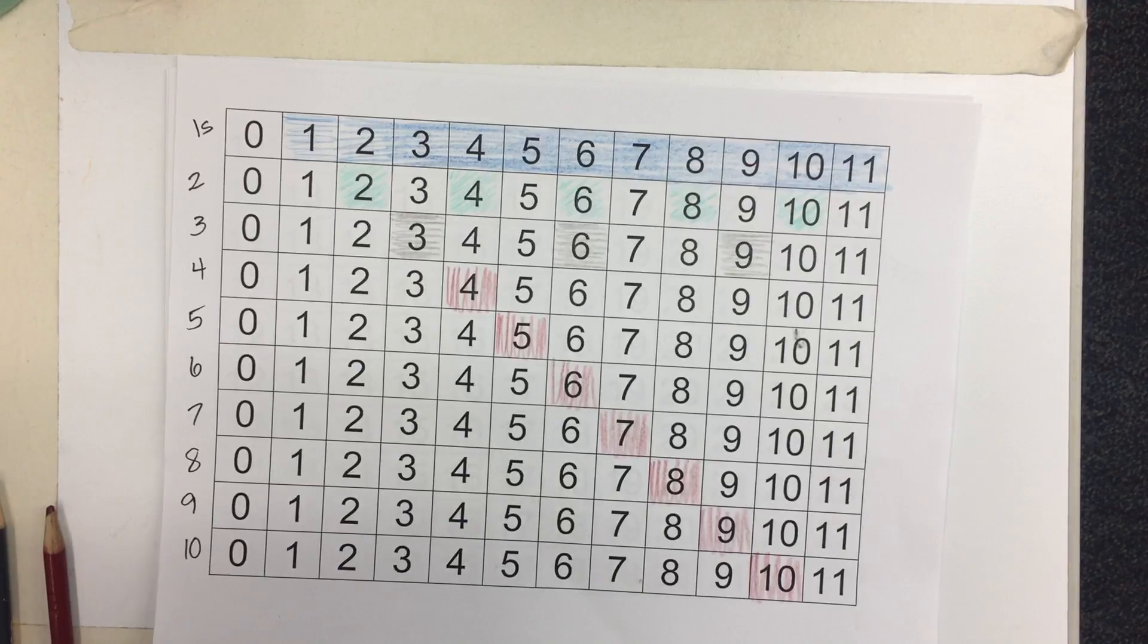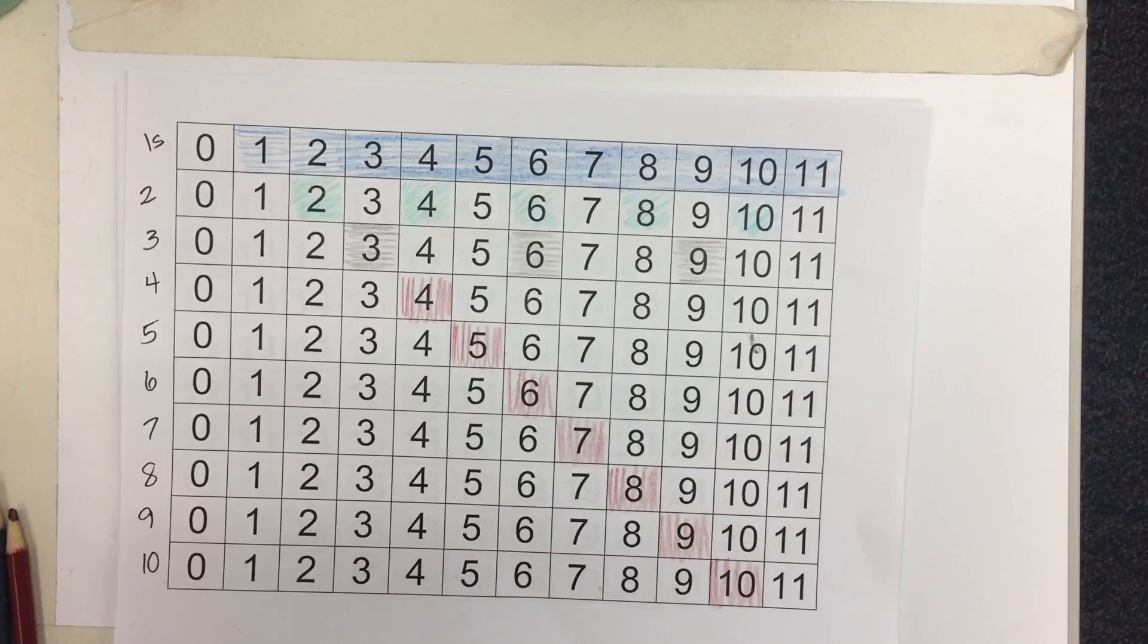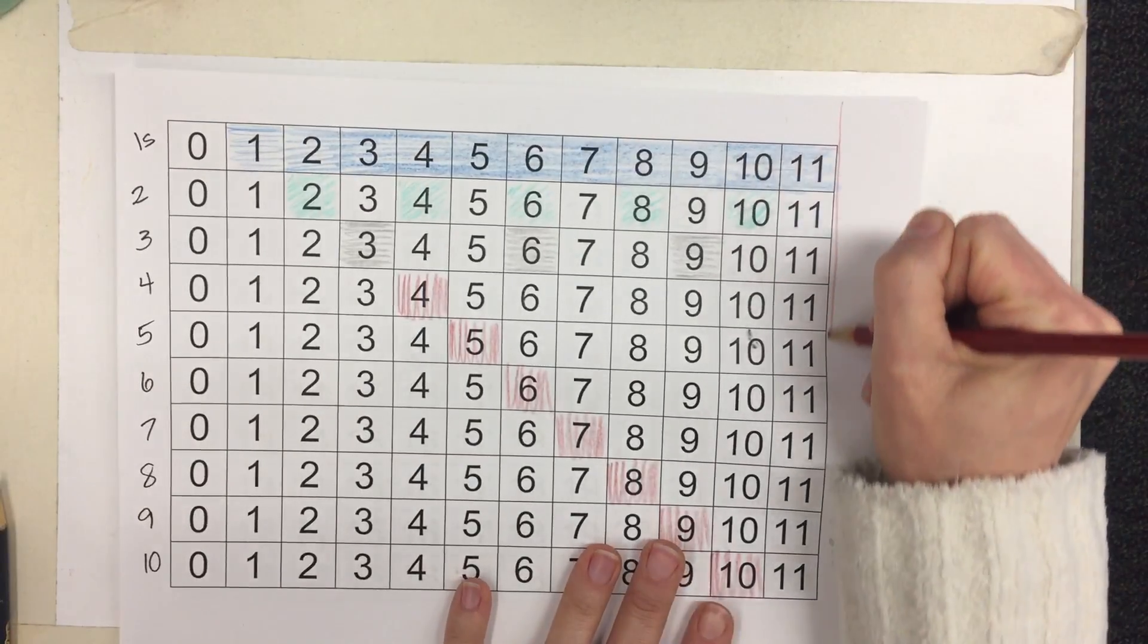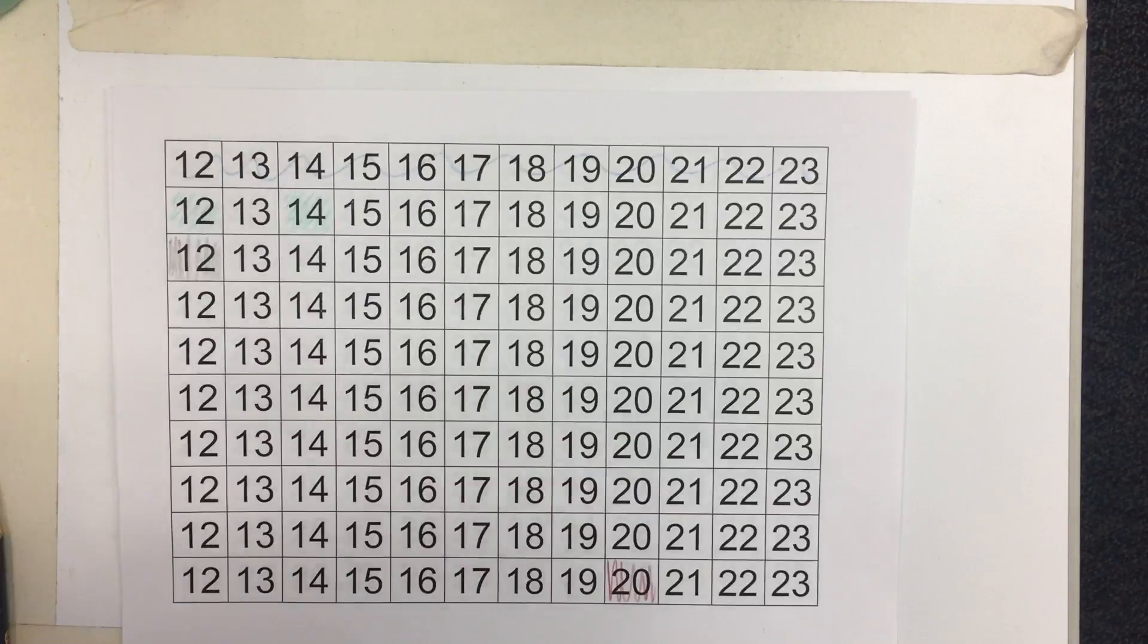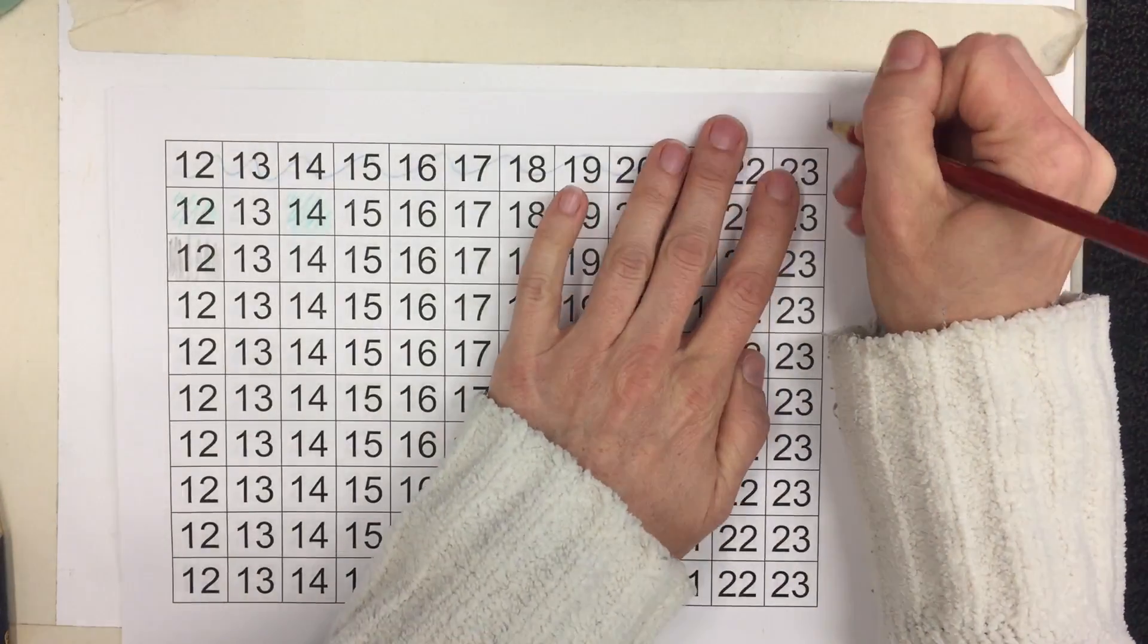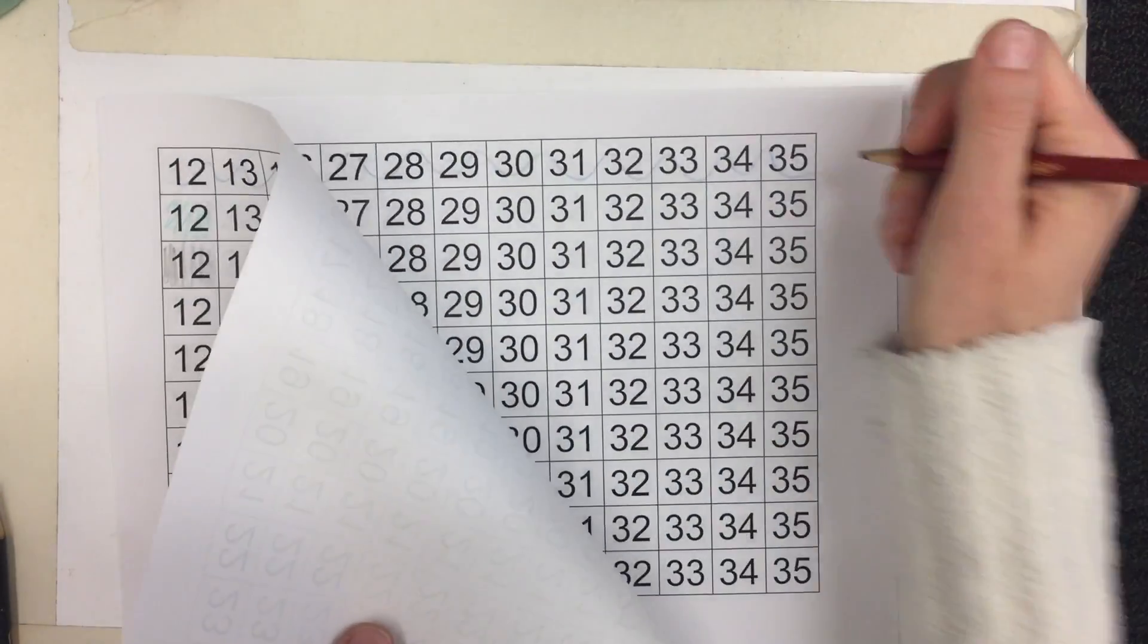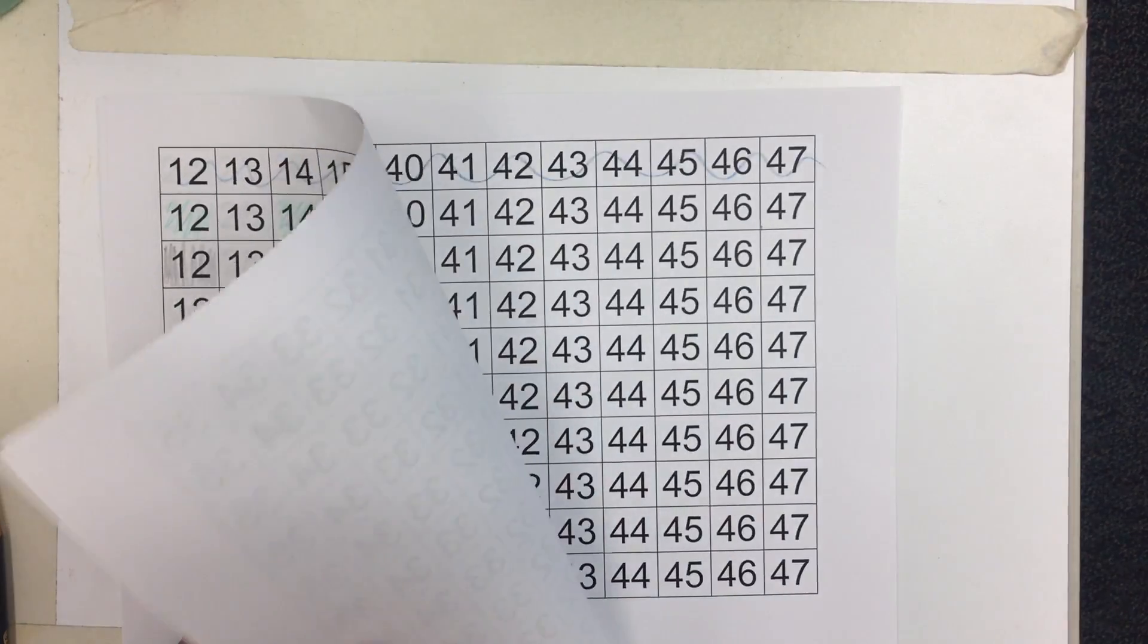And then the next step is to cut this out. But we're not going to cut everything. We're just going to cut right here, right on the line. Right on the line. You're going to cut right here on the line, right here, and right here.